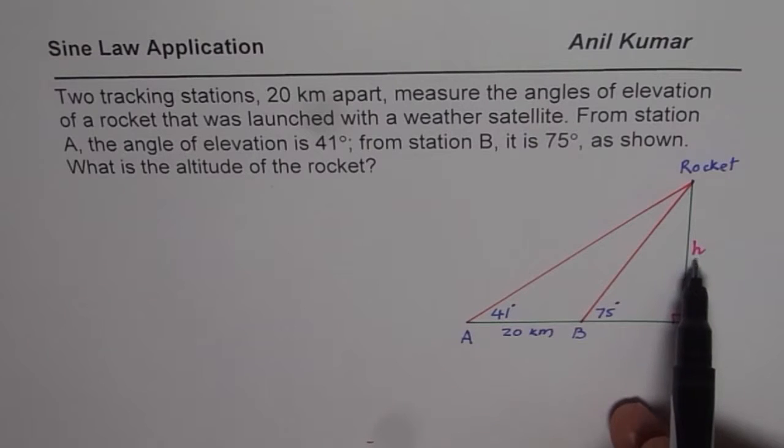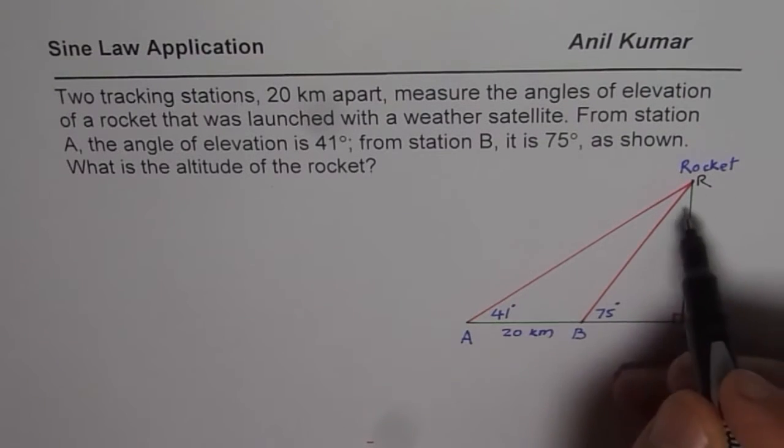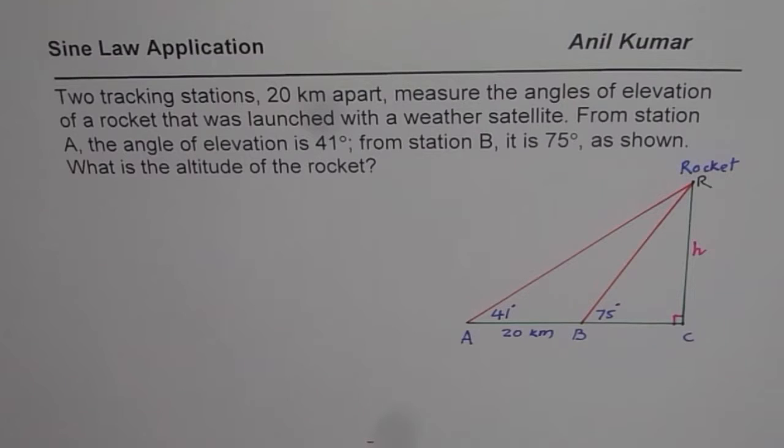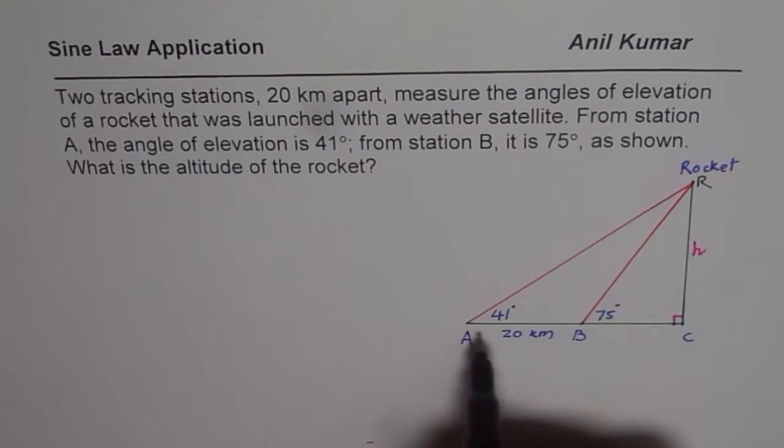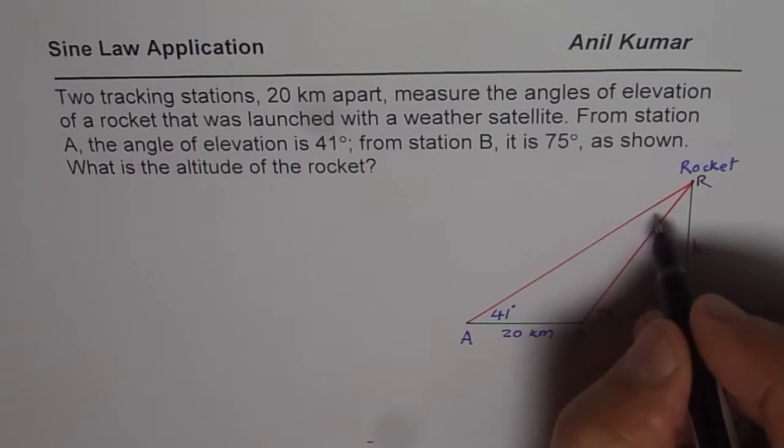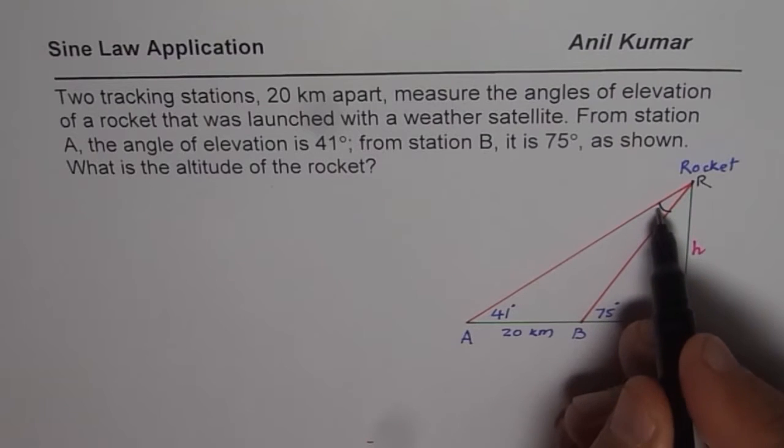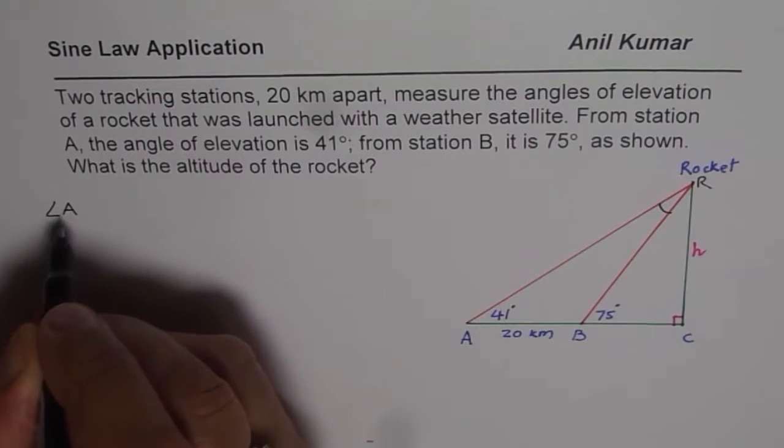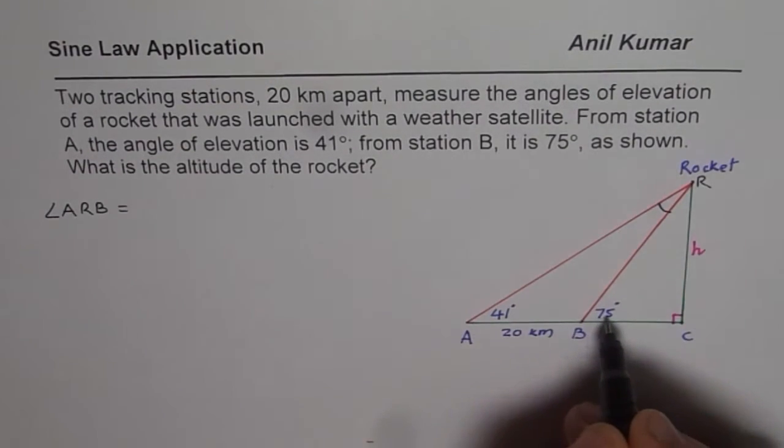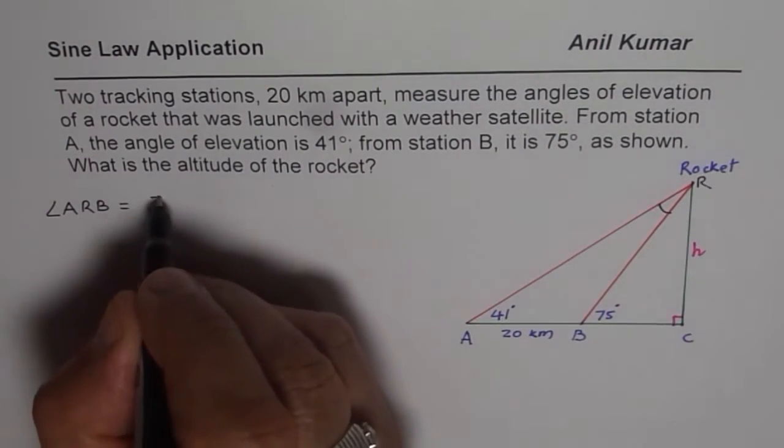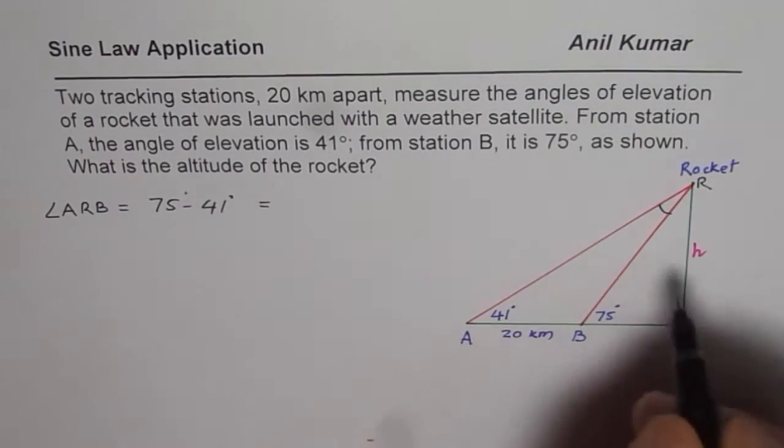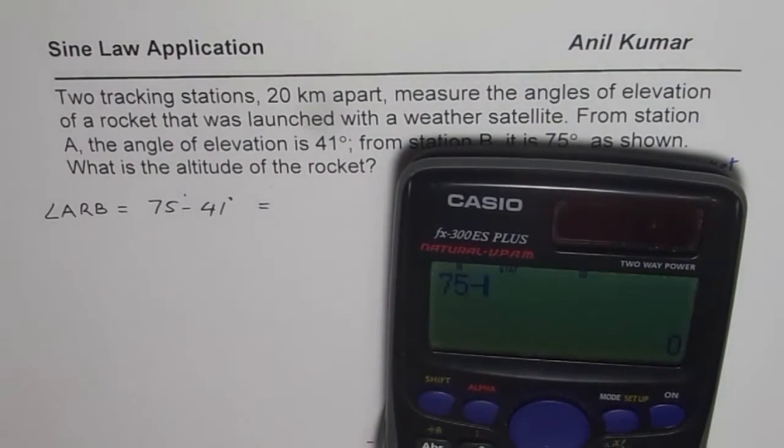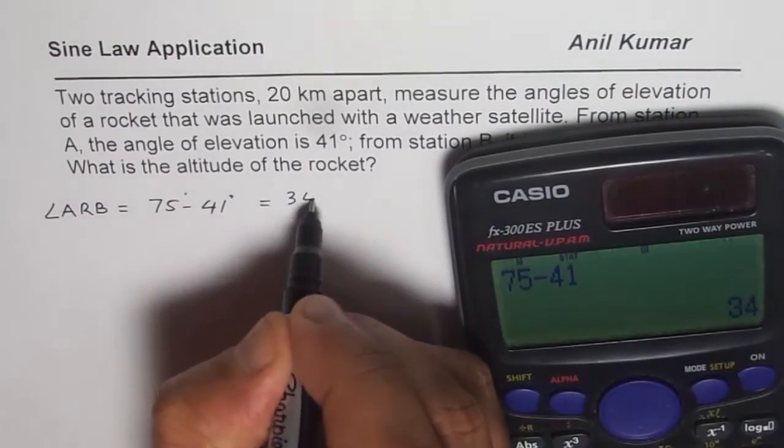So to find height what should we do? We should first find, let this point be R, first find the length of RB solving the triangle RAB. Now to solve this triangle RAB, we know one side 20 kilometers. We can actually find the angle opposite to the given side. That angle should be, exterior angle is 75, so the angle ARB is equal to, sum of these two is 75, so that should be 75 minus 41 degrees. So that is how you can find the angle R. So let us do 75 minus 41 equals to 34 degrees, so we get 34 degrees.